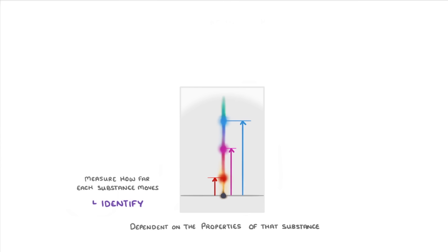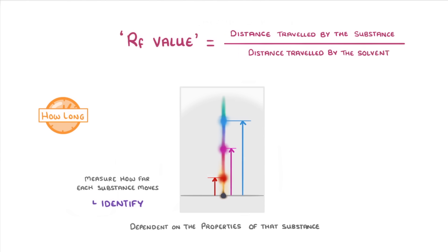How far each of the chemicals moves though is also going to depend on how long we leave the experiment. So instead of comparing the actual distance, we calculate a ratio called the RF value, which is equal to the distance traveled by the substance divided by the distance traveled by the solvent. So if this pink substance had traveled 6 cm from the baseline and the solvent had traveled 10 cm, then our RF value would be 6 divided by 10, so 0.6.